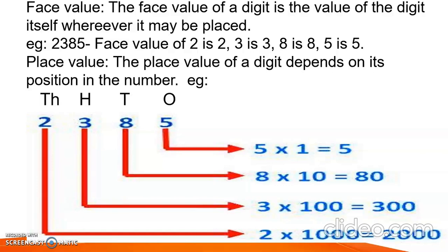Place value. The place value of a digit depends on its position in the number. For example, in 2385: 5 is in the 1's place, so 5 × 1 = 5. 8 is in the 10's place, so 8 × 10 = 80. 3 is in the 100's place, so 3 × 100 = 300. And 2 is in the 1000's place, so 2 × 1000 = 2000.